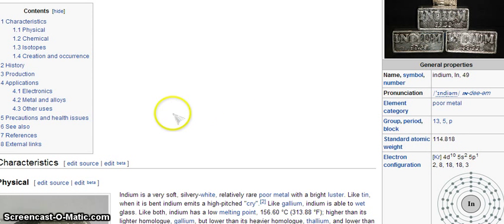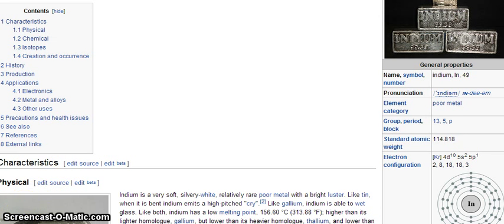Now all we need to do now is simply write our final answer. So I have now written our final answer of the electronic configuration of your indium. That's 1s2, 2s2, 2p6, 3s2, 3p6, 4s2, 3d10, 4p6, 5s2, 4d10, and 5p1.